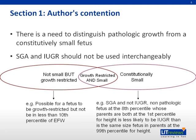On the diagram, you'll see three different examples of how a fetus could be classified. The first example is a fetus that is not small but is growth-restricted — it is possible to be growth-restricted without being below the 10th percentile of estimated fetal weight. On the other hand, a fetus could be constitutionally small due to parental factors, sex, or ethnicity. Finally, you could have a fetus that is both growth-restricted and small, and the author says this calls for a need for better definitions.